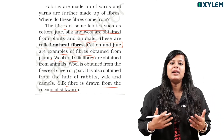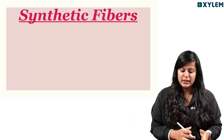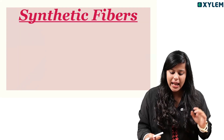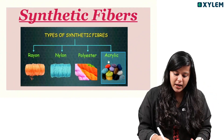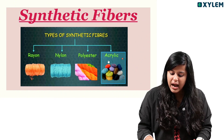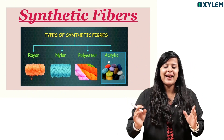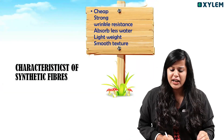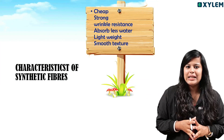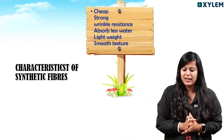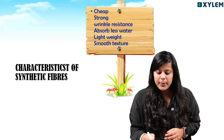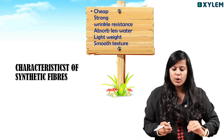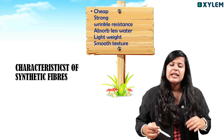We also have synthetic fibers like rayon, nylon, polyester, and acrylic. These are examples of synthetic polymers. Their properties are: strong, wrinkle resistant, absorb less water, and have a light and smooth texture.